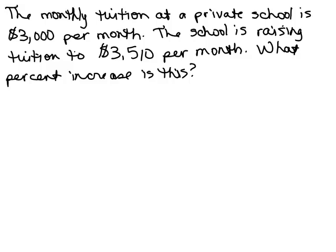Here's our first example. The monthly tuition at a private school is $3,000 per month. The school is raising tuition to $3,510 per month. What percent increase is this? So we're looking for our percent, and remember what we need to know. Our base, which goes in the denominator, the original amount is what it was first. It was $3,000 per month, so that's the base or the original amount that goes in the denominator.